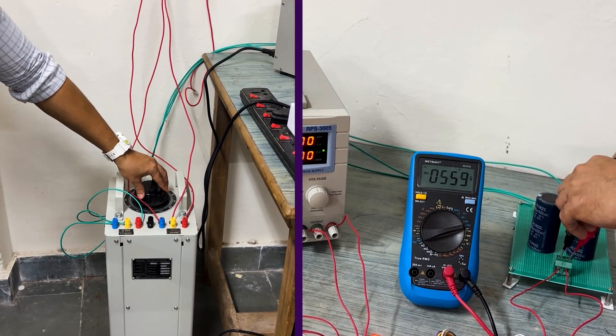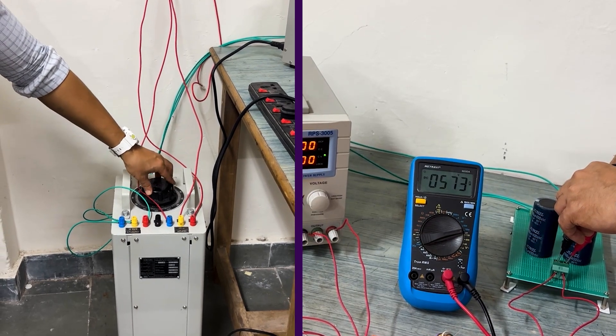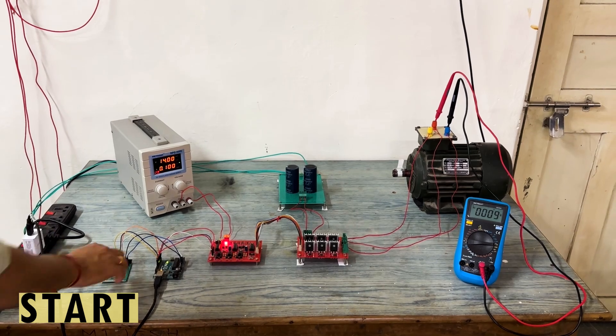We slowly increase the auto transformer knob and set the output of the rectifier circuit to around 570 volts. Press the top switch to start the motor.